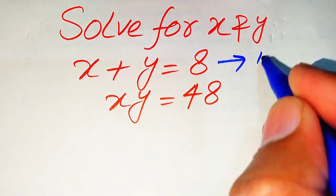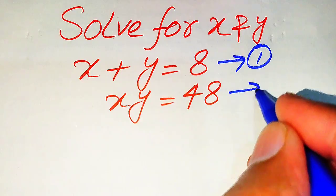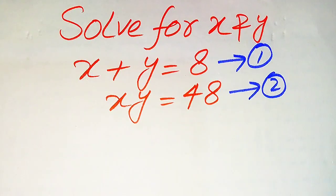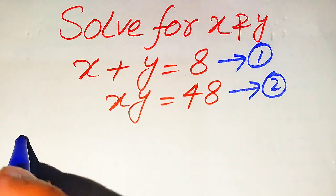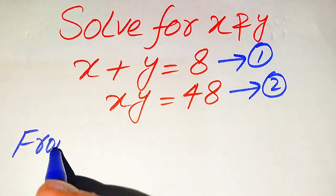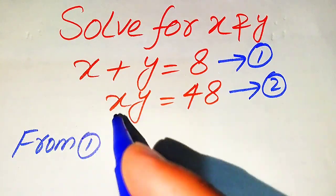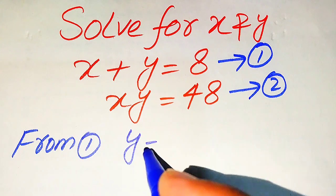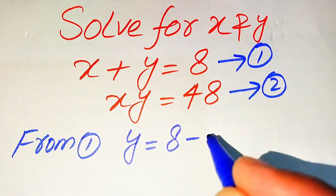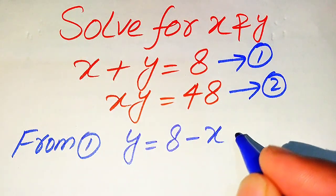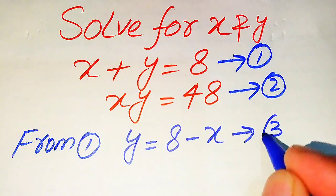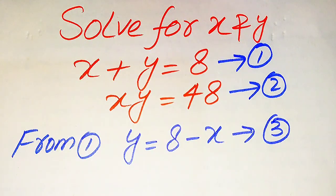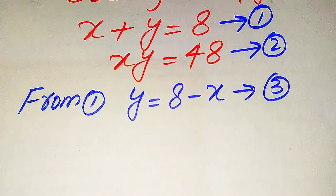So, here first we call this equation number 1 and this is our equation number 2. Now here we need to focus on equation number 1, so from equation number 1 we move x to the right hand side and we easily get the value of y is equals to 8 minus x. We call this our equation number 3.